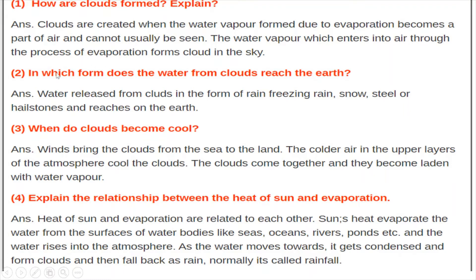The water vapour which enters the air through the process of evaporation forms clouds in the sky. Due to which process? Evaporation. Who causes the evaporation of water bodies? Sunlight or heat — due to the heat of the sun, evaporation takes place. The water goes up, becomes part of the air, and due to condensation, forms clouds.